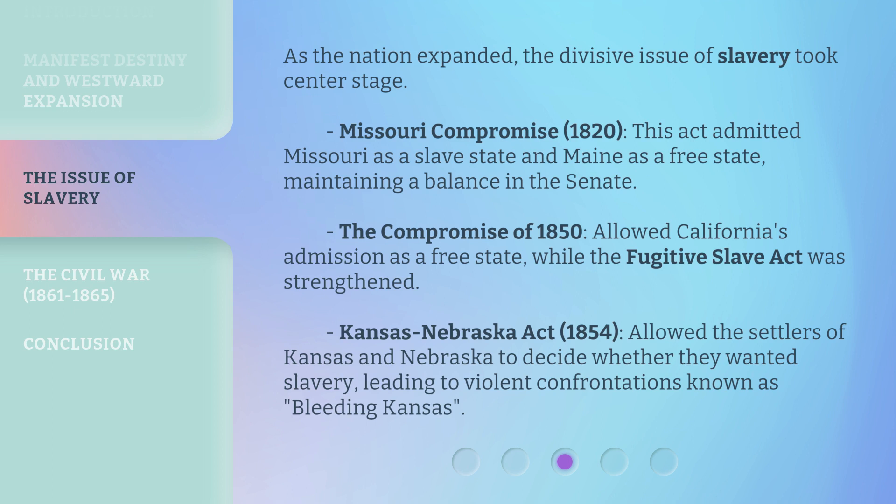As the nation expanded, the divisive issue of slavery took center stage. Missouri Compromise, 1820: this act admitted Missouri as a slave state and Maine as a free state, maintaining a balance in the Senate. The Compromise of 1850 allowed California's admission as a free state, while the Fugitive Slave Act was strengthened. Kansas-Nebraska Act, 1854: allowed the settlers of Kansas and Nebraska to decide whether they wanted slavery, leading to violent confrontations known as Bleeding Kansas.